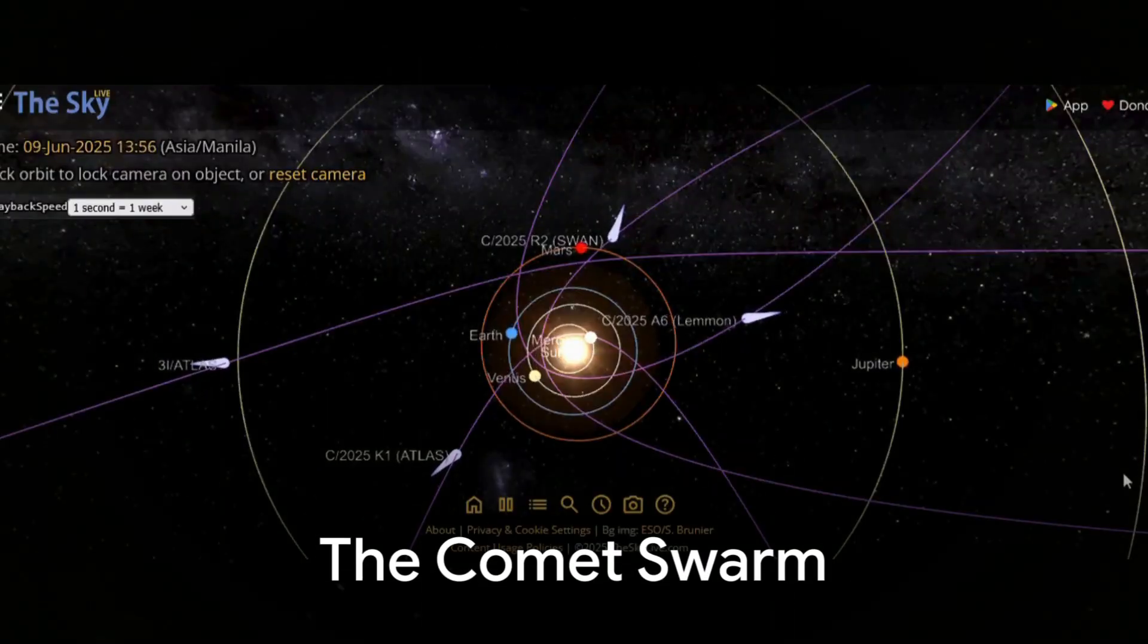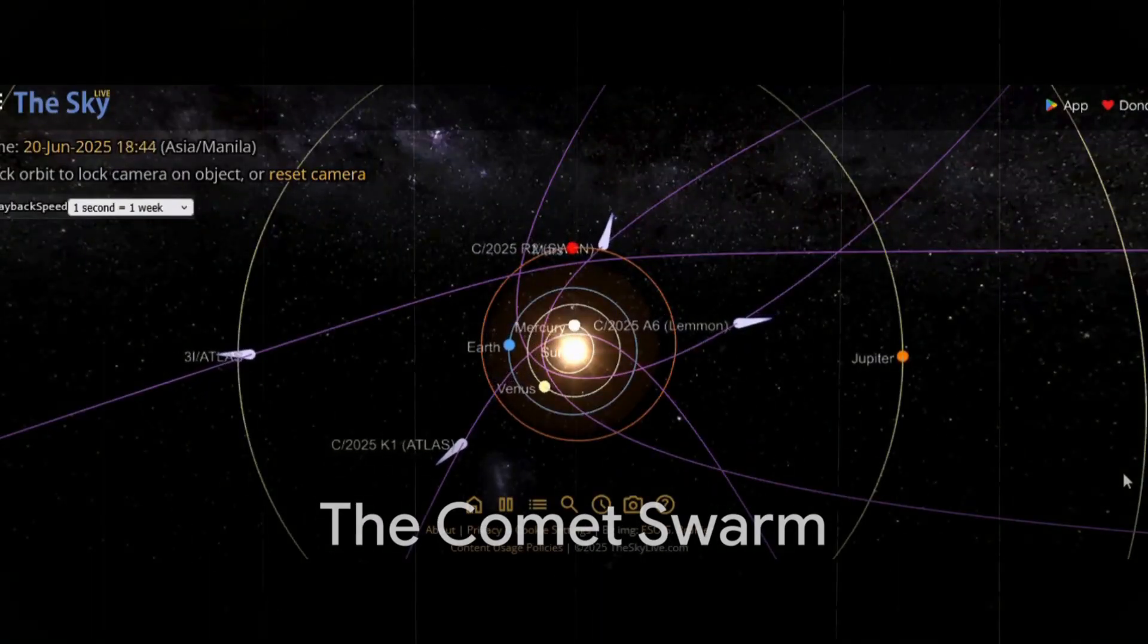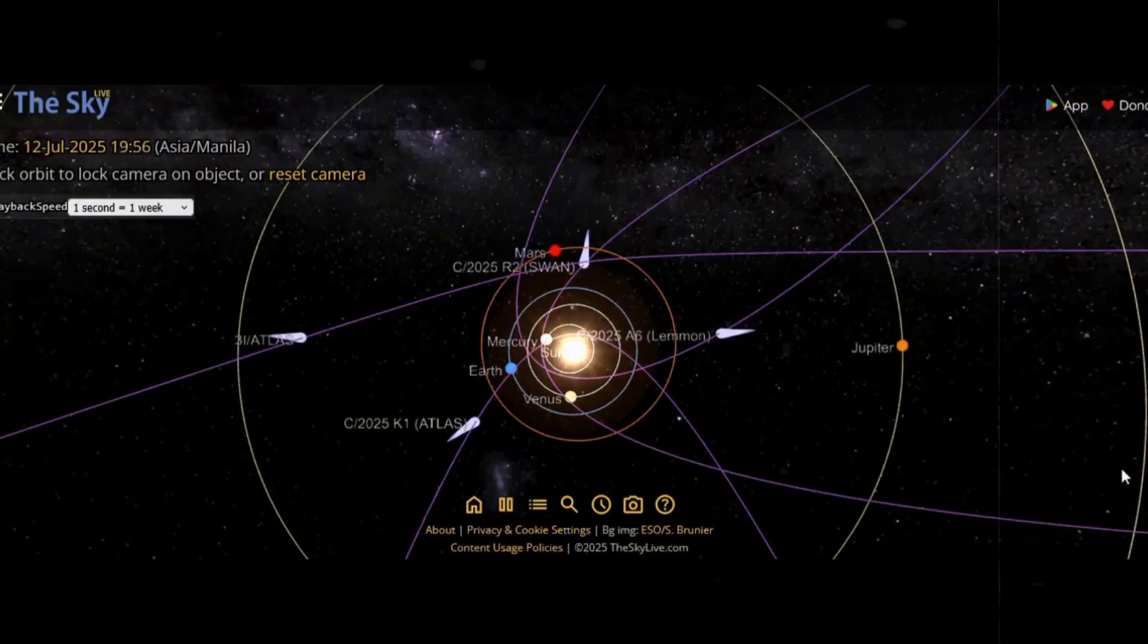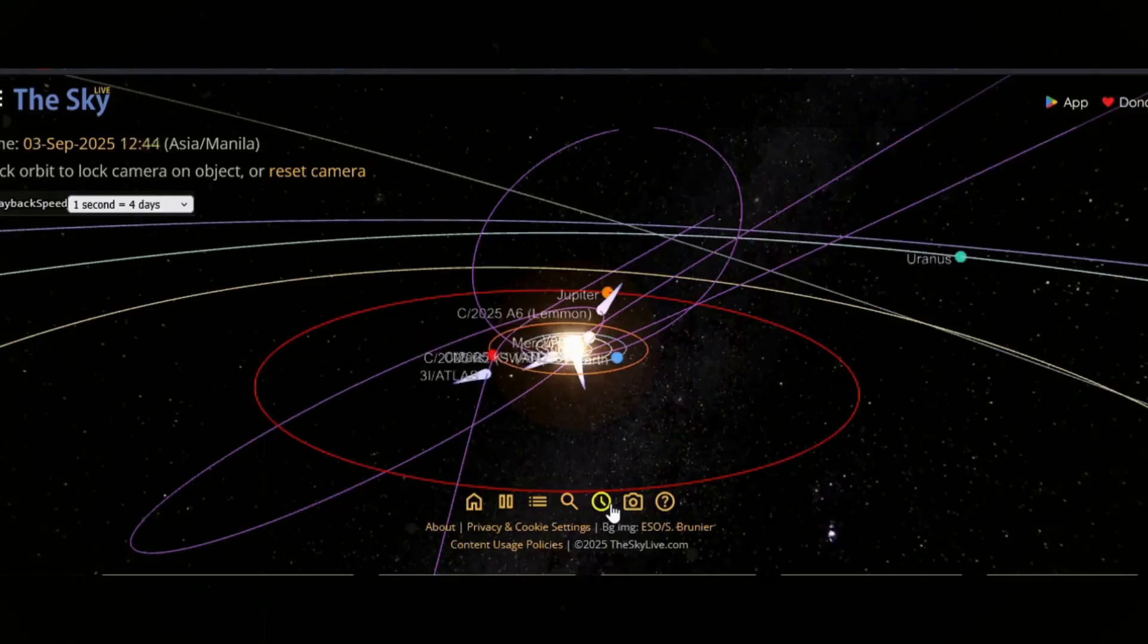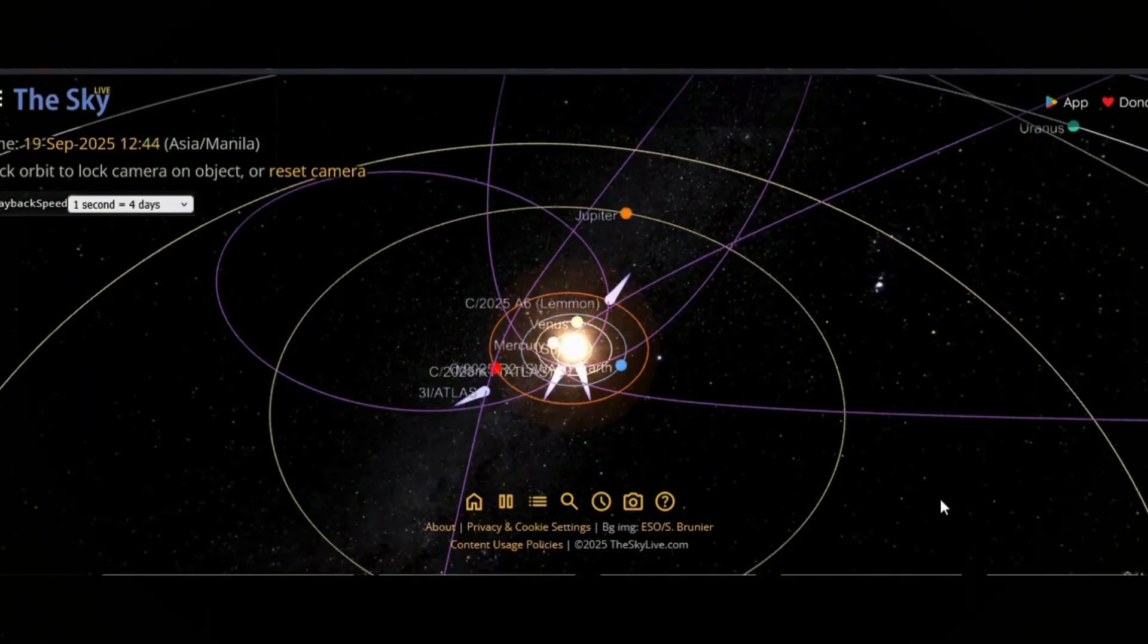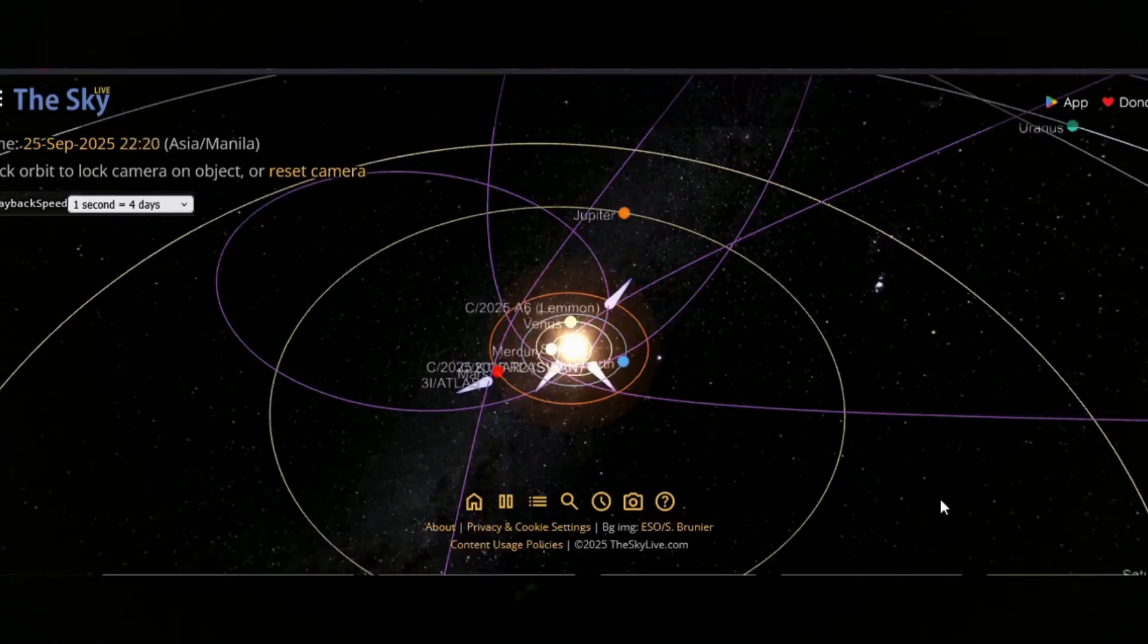It is not alone. At least six other comets are inbound, each threading the solar system with its own unpredictable arc. Some will skim frighteningly close to the sun, diving within 50 million kilometers, closer than Mercury itself, where the heat is enough to tear them apart.